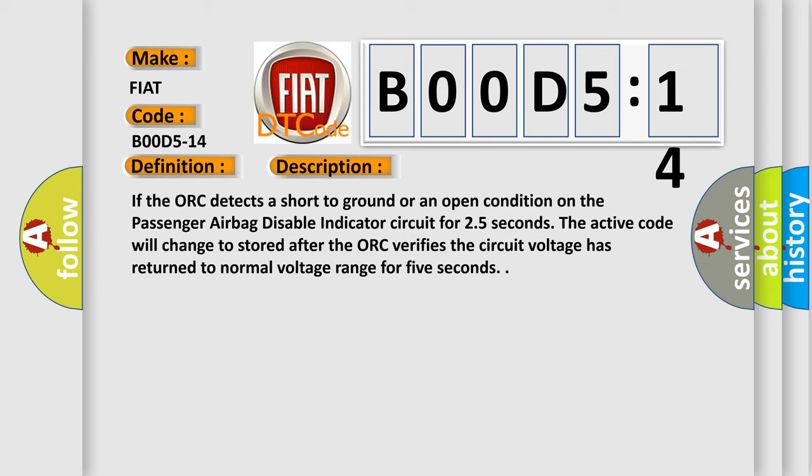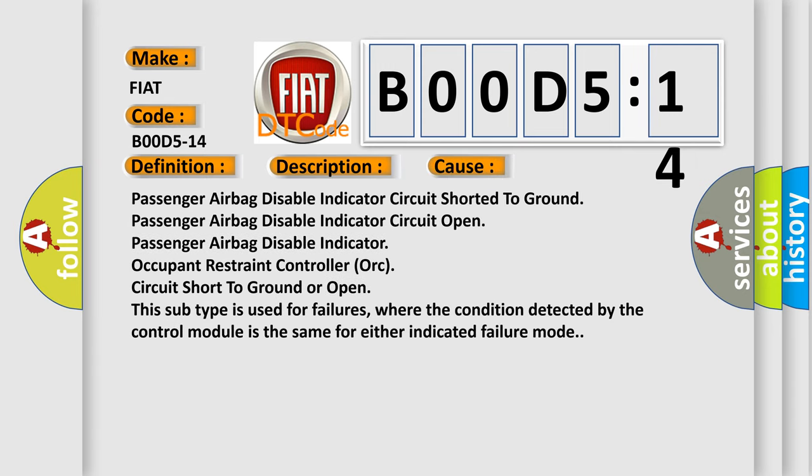This diagnostic error occurs most often in these cases: Passenger Airbag Disable Indicator Circuit Short to Ground, Passenger Airbag Disable Indicator Circuit Open, Passenger Airbag Disable Indicator, Occupant Restraint Controller AUK Circuit Short to Ground or Open. This subtype is used for failures where the condition detected by the control module is the same for either indicated failure mode.